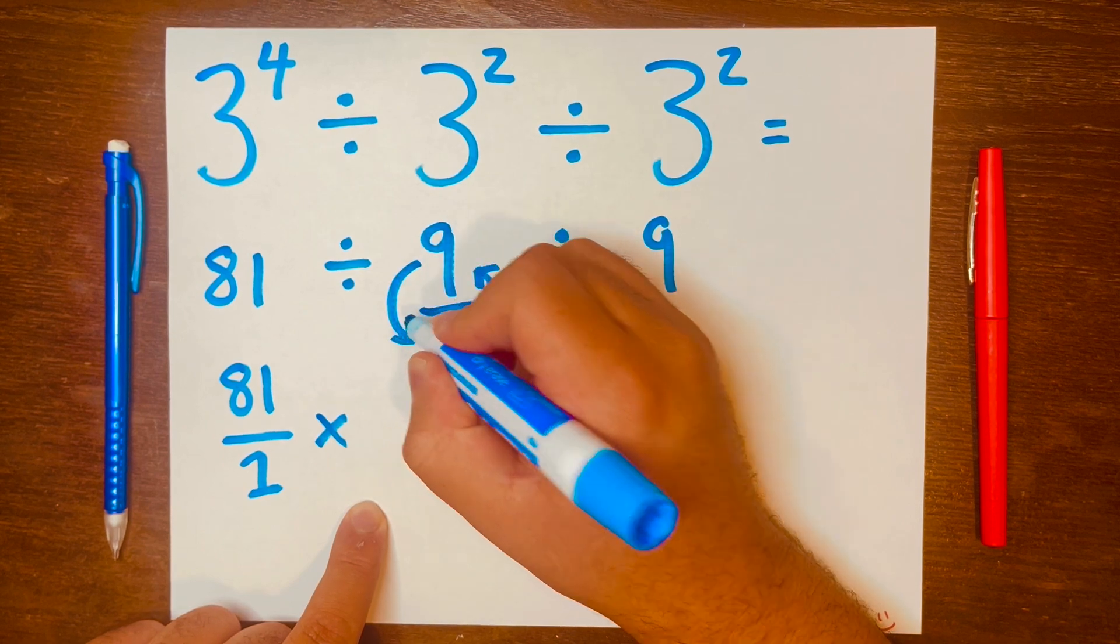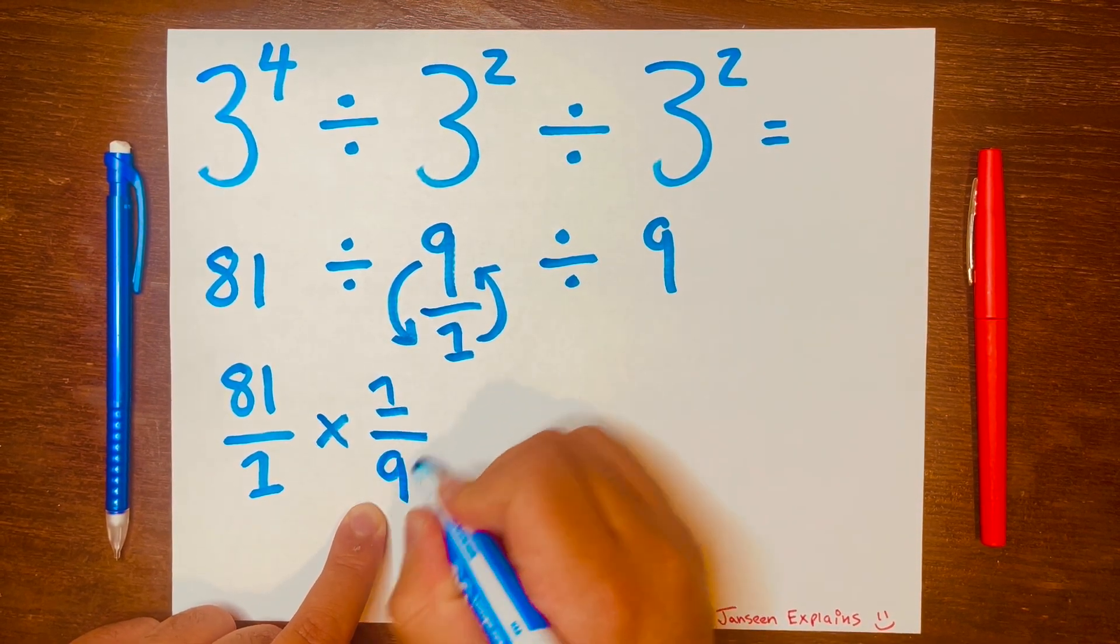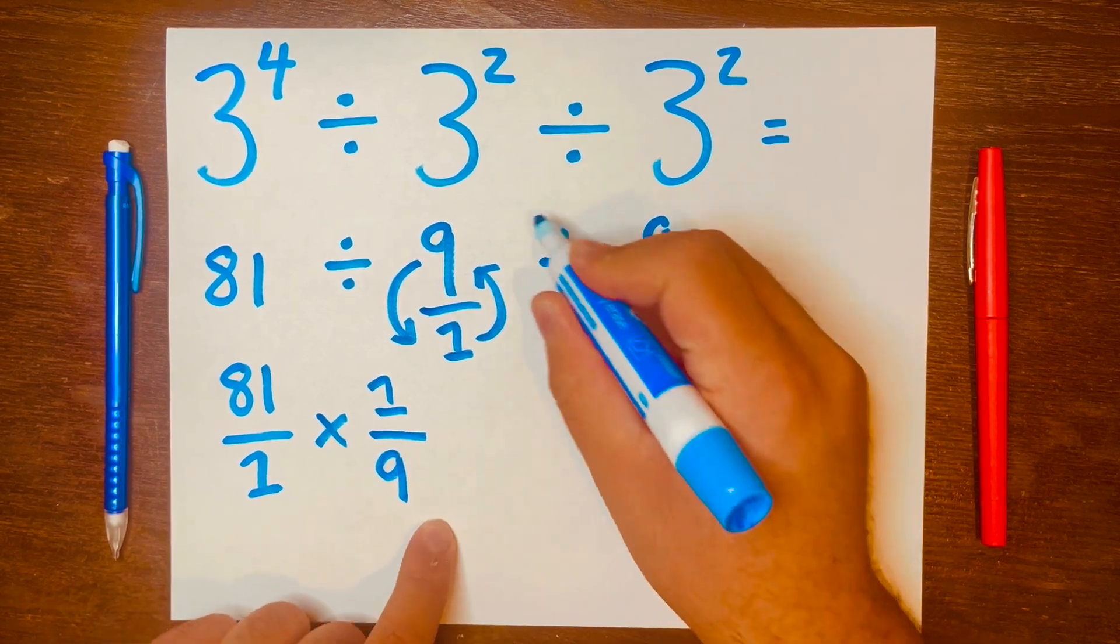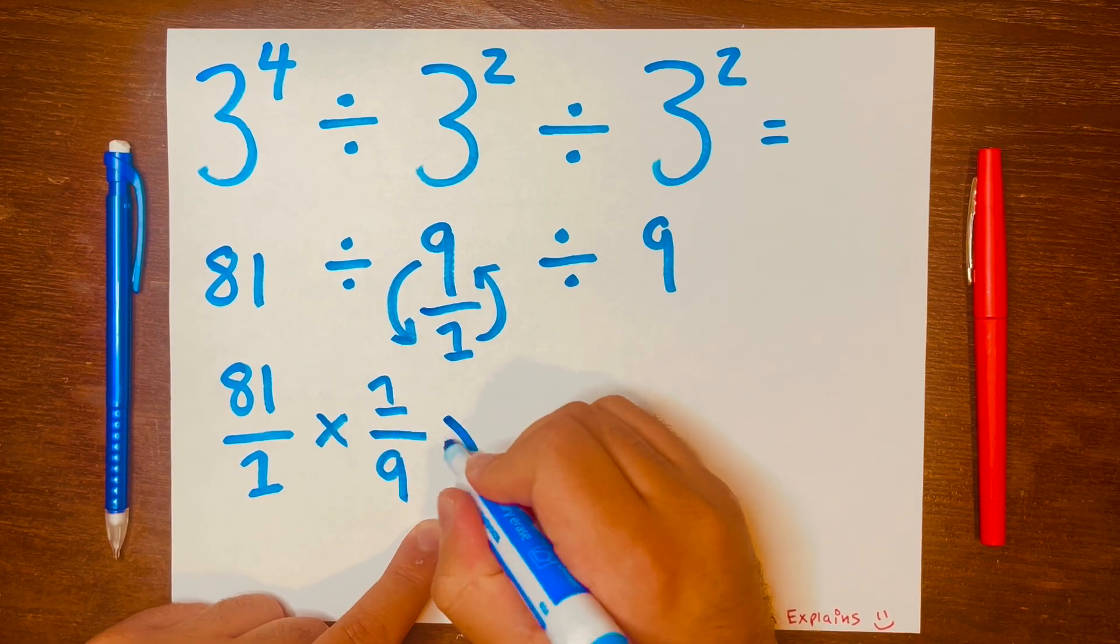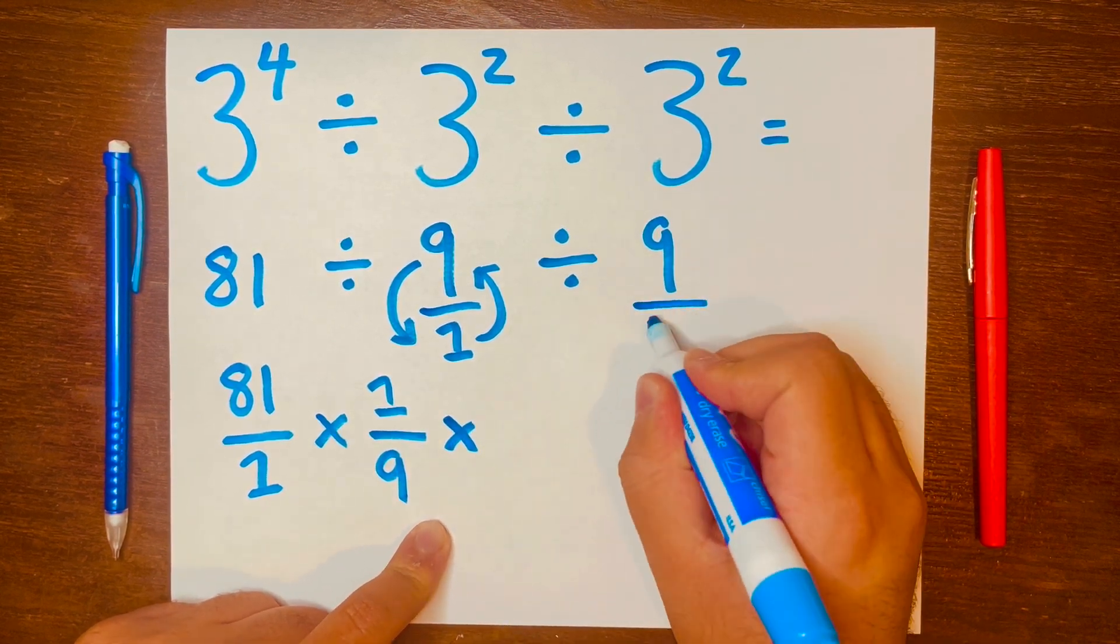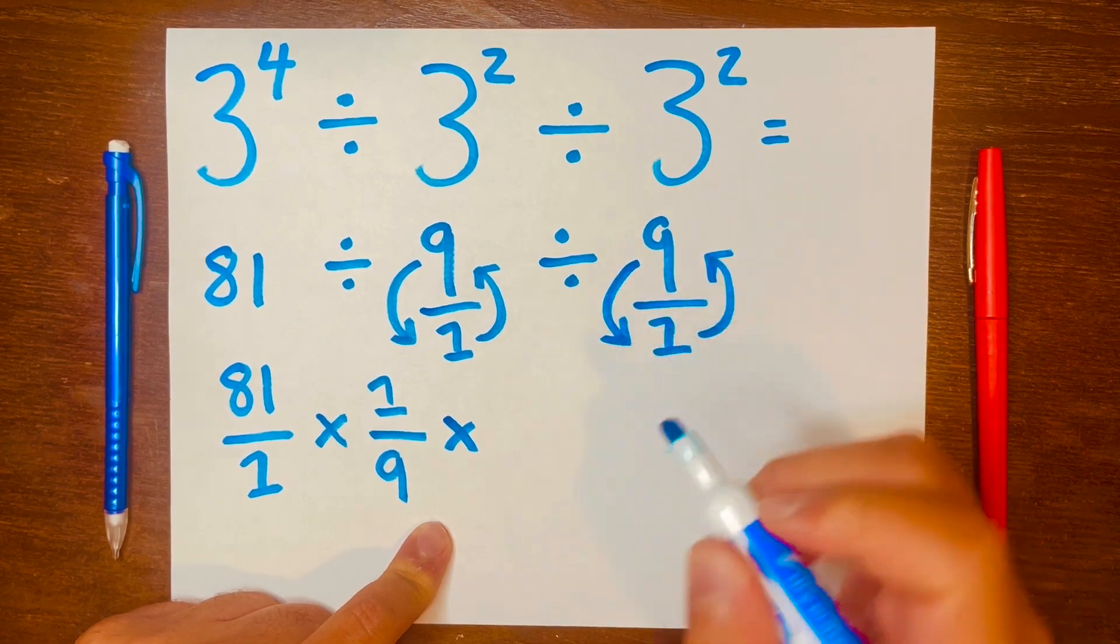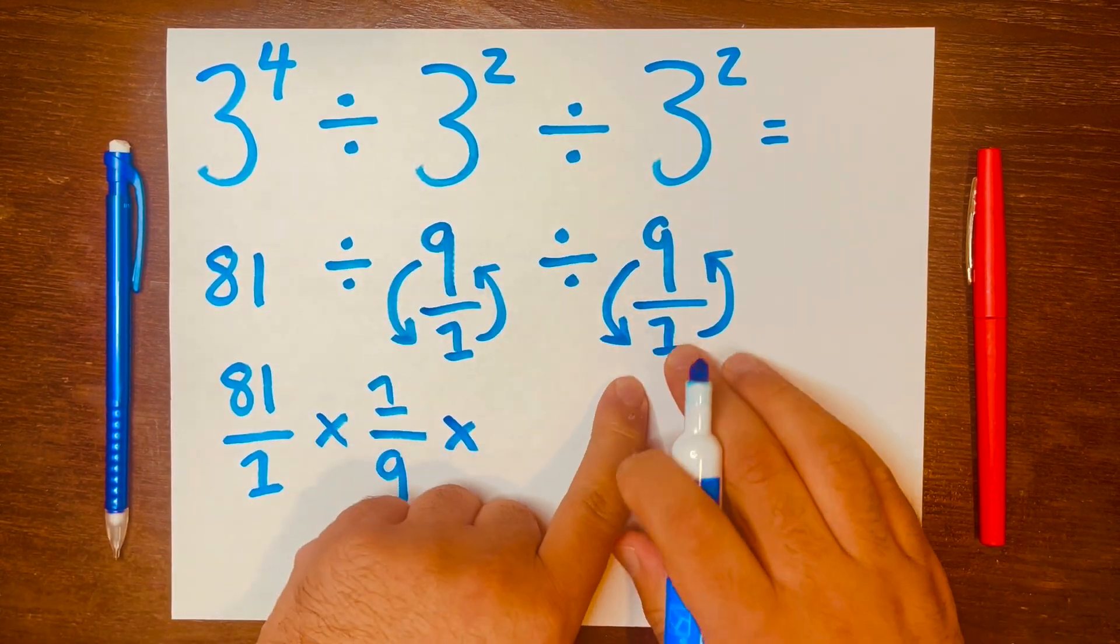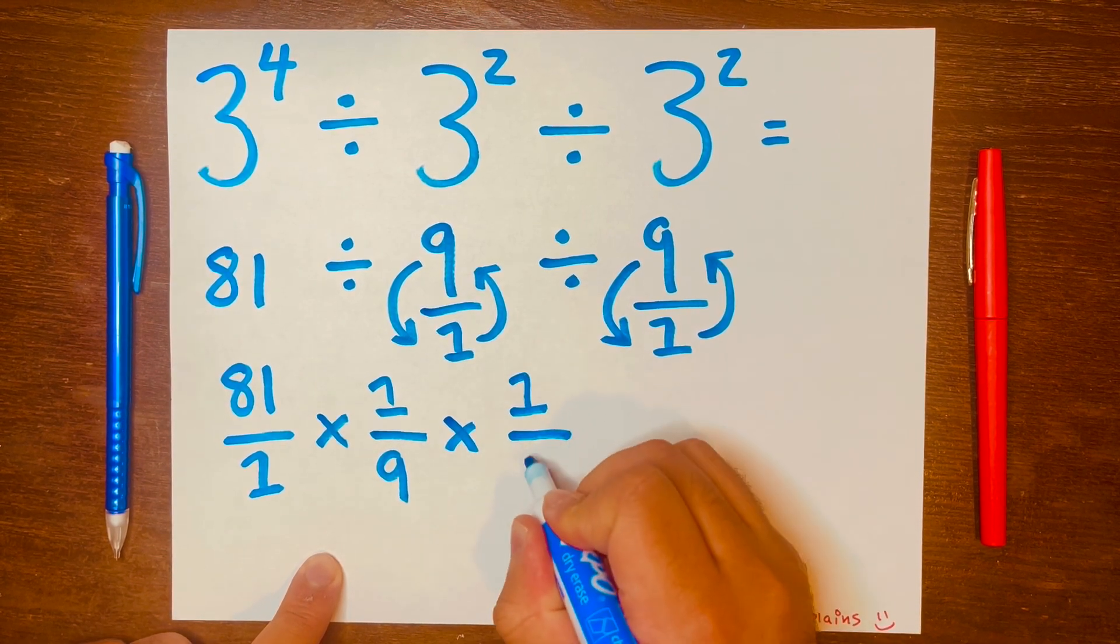So now it becomes one over nine. And then we'll change this division symbol to multiplication and do the same thing here: write the one on top of the fraction and the nine in the bottom of the fraction. And so it becomes one over nine.